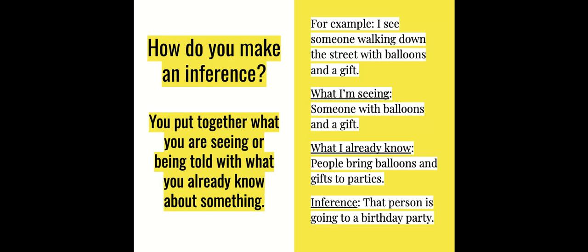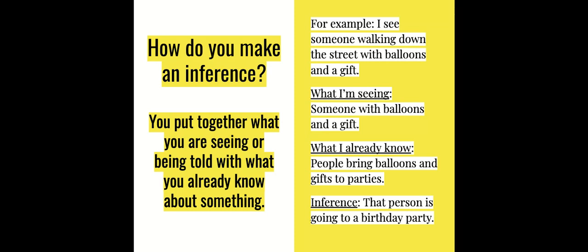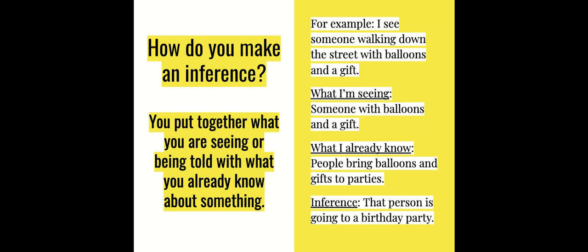So for example, let's say I see someone walking down the street and they are holding balloons and a gift. What am I seeing? I see someone with balloons and a gift. What do I already know? People bring balloons and gifts to parties, and so an inference I can make is that that person is going to a birthday party, or really any party.